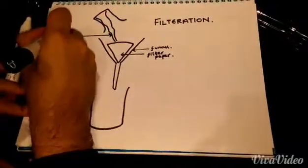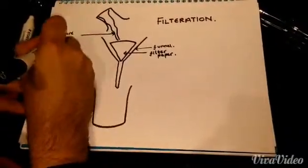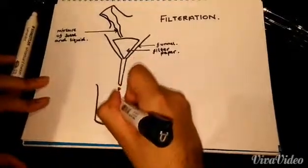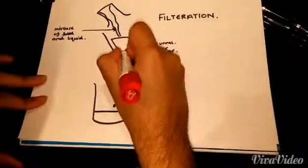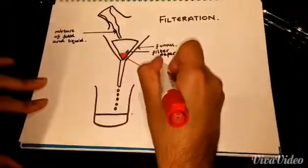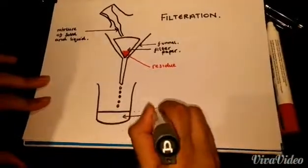The mixture is poured into a funnel containing a filter paper. The liquid flows through the filter paper and is collected. The solid particles are unable to pass through the filter paper. These deposits are known as the residue.